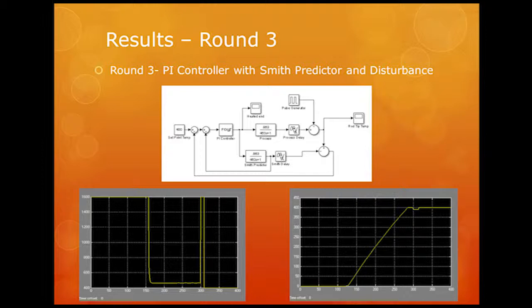The controller was able to handle that as well. As you can see, it brought it back up to the temperature. Now, it didn't reject it entirely. If we were to play around with the disturbance, we could probably get it to that point. But in the time that we had, we were able to show that our Smith predictor controller is able to handle some disturbances in the tip temperature. Do you have any questions?